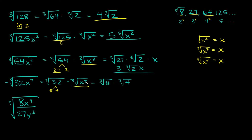Now for the cube root of x to the seventh: one way to break down x to the seventh is as x cubed times x cubed times x, because 3 plus 3 plus 1 equals 7. The reason I want to use x cubed as much as I can is because the cube root of x cubed equals just x, which simplifies the math.